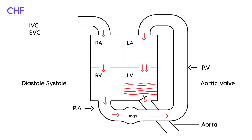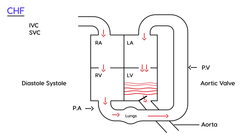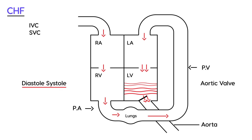Blood accumulates up to a certain point, then the aortic valve, which was closed before, opens up and allows blood to flow into the aorta. That phase is known as systole — when blood is pumping into the aorta and eventually into the circulation.